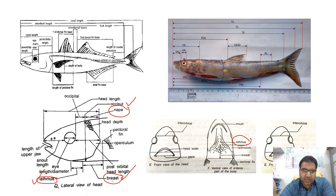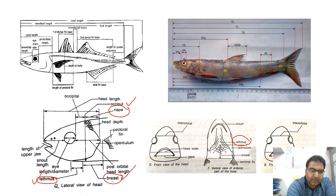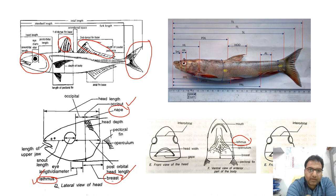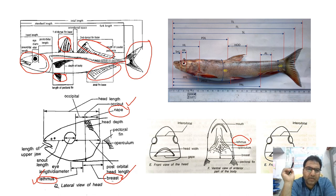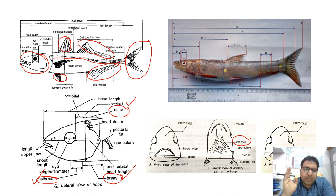Let us have a quick revision of the morphology of the fish. We have the head of the fish, the first dorsal fin, the second dorsal fin, the caudal fin, the anal fin, the pectoral fin, and the pelvic fins. There is also a lateral line on the fish which we shall deal with in later lectures. That is all for today regarding the morphometric characters of a fish. Next time we shall be dealing with the meristic characters of the fish.